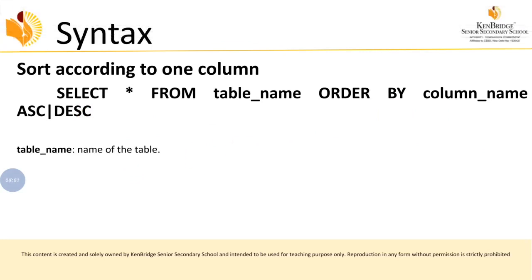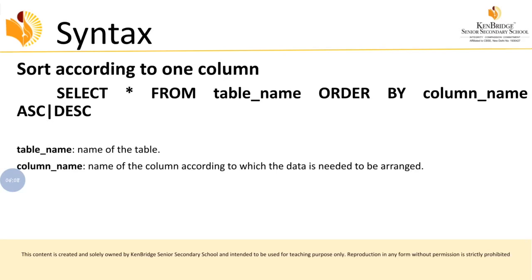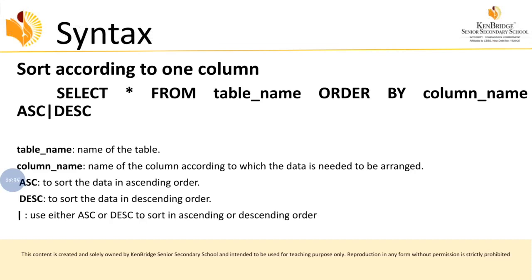Here, 'table_name' is the name of the table, and 'column_name' is the name of the column according to which the data needs to be arranged. ASC denotes ascending order and DESC denotes descending order. You can use either one of these options in your query.